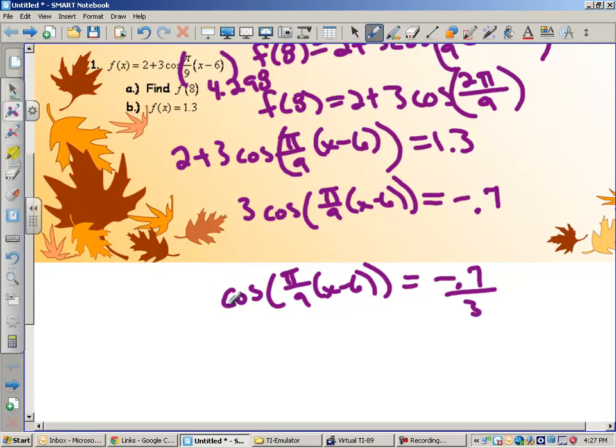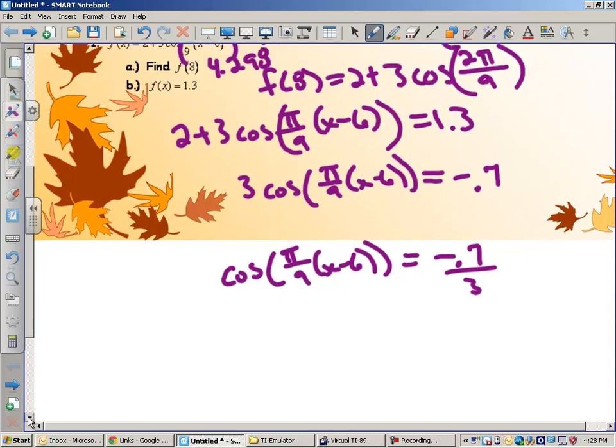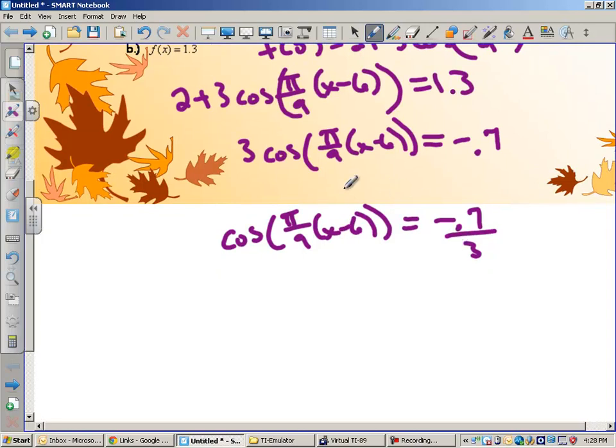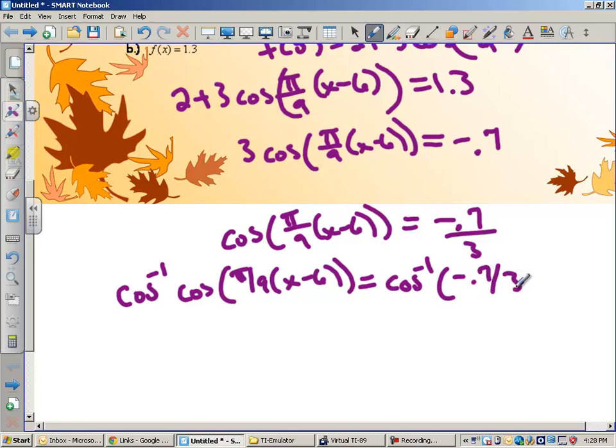I'm trying to get to my x here. So I'm going to divide by 3 and I get the cosine of pi over 9 times x minus 6 equals negative 0.7 over 3. Now, what we have to do is get inside of this x. We have to undo a cosine. And of course, we know the way we undo a cosine is by taking the arc cosine of both sides.